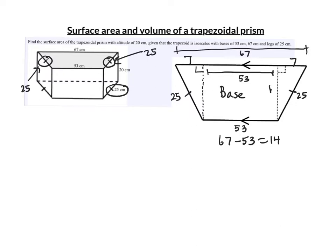So that means on our picture of our base, we have a 25 and a 25, and this is our height. We can use Pythagorean theorem to find that. 7 squared plus h squared equals the hypotenuse 25 squared. 49 plus h squared is 625.